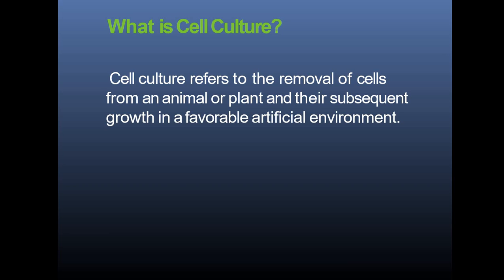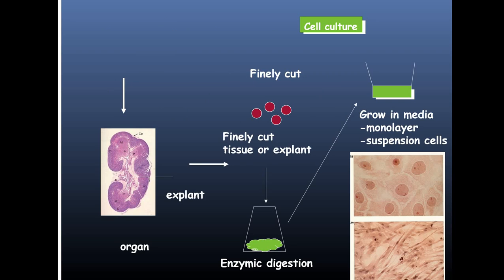A small subset of cells or tissues is taken and then multiplied. To understand how we do cell culture: from an organ you take some tissue or cells — that is referred to as an explant. This explant is finely cut using mechanical methods or subjected to enzymatic digestion, then grown in certain culture media. This is what is referred to as cell culture.